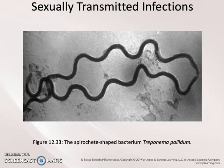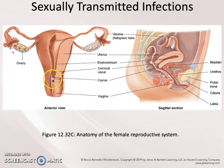Primary syphilis manifests as painless sores called cankers on the penis or on the cervix of the infected individual. The cervix is located between the vagina and the uterus, so it's inside the female and is often undetected. These cankers disappear in about four to six weeks, giving individuals the impression that their immune system has cleared the disease. However, if untreated — meaning no antibiotics — the individual will eventually progress to secondary syphilis.